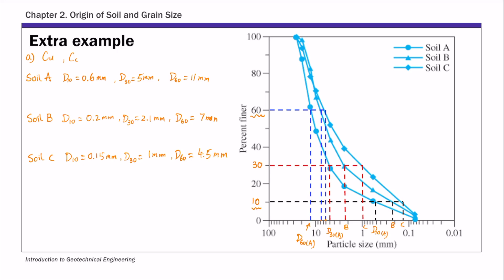Once you have these d values, calculate the two coefficients using their definitions. Cu is defined as d60 over d10. Substituting: 11 over 0.6, that's about 18.33 for soil A. For the coefficient of gradation Cc, by definition, this is d30 squared over d60 times d10. Substituting: 5 squared over 11 times 0.6, that gives 3.78.